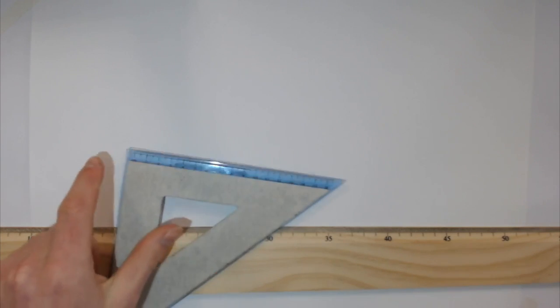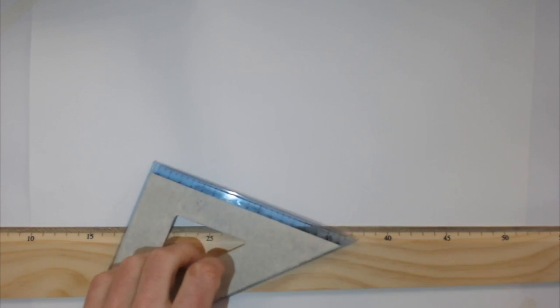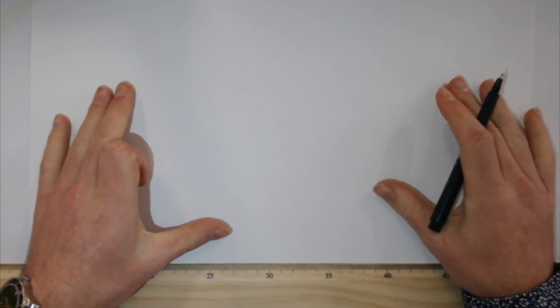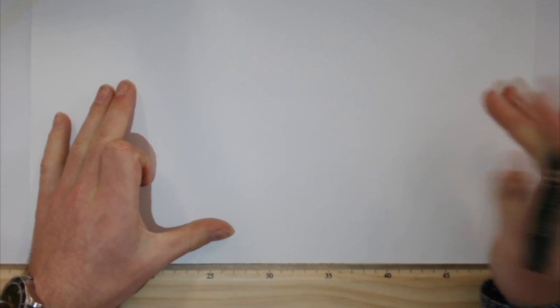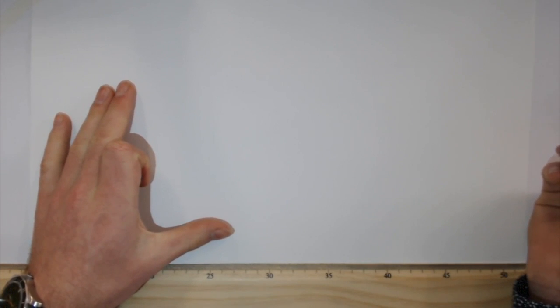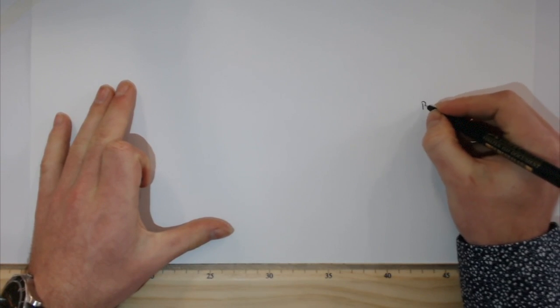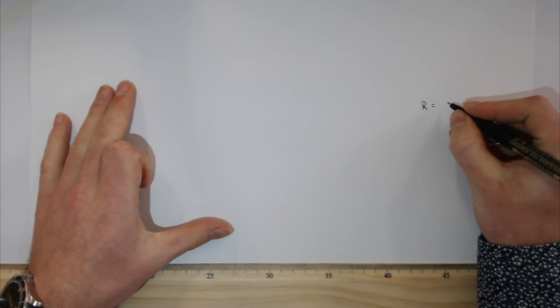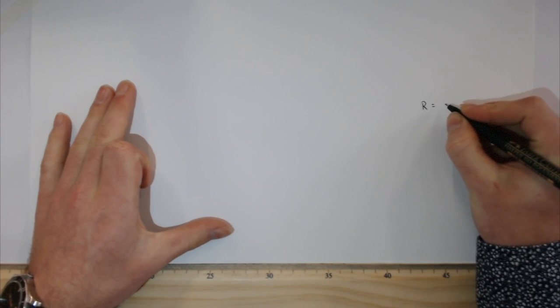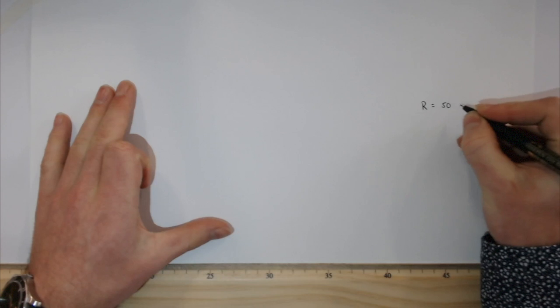Okay, so what we're going to learn now today is we're going to actually learn how to find the center of a circle if we're given the radius and we're given two points on that circle. So today, I'm just going to set up and I'm just going to give you a few dimensions.